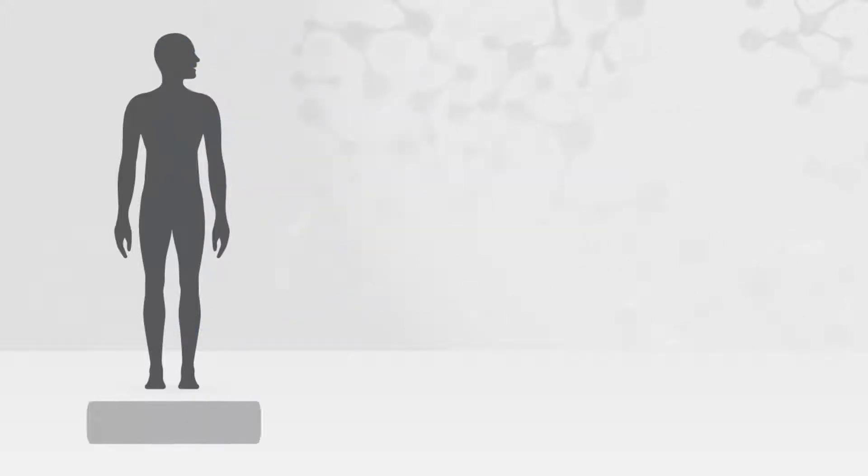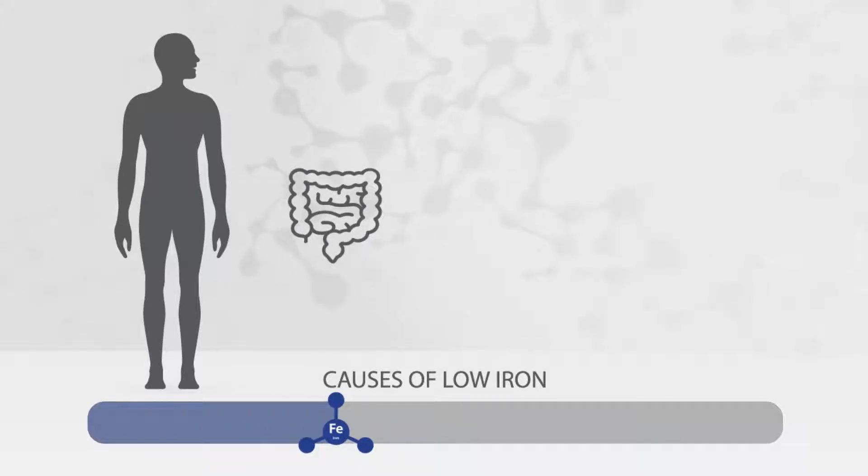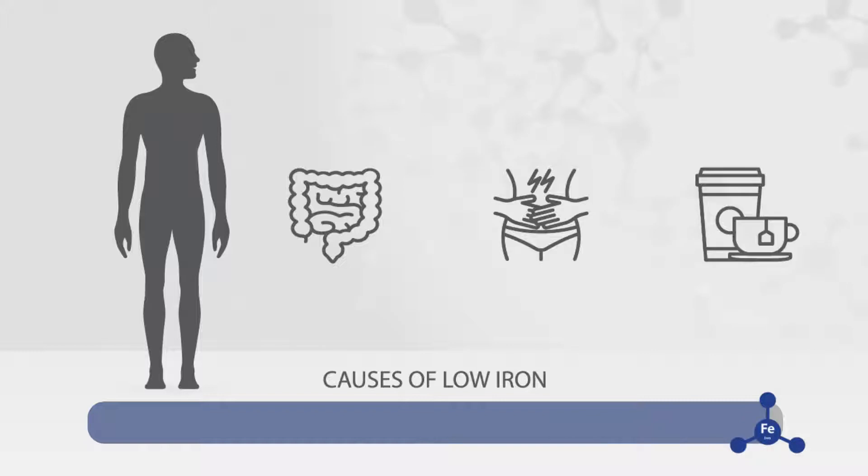Very low iron or iron deficiency can arise due to poor dietary intake of iron or poor absorption due to underlying gut problems or heavy menstrual bleeding. Tea and coffee intake can block iron absorption in the body and may also be a factor in contributing to low iron levels.